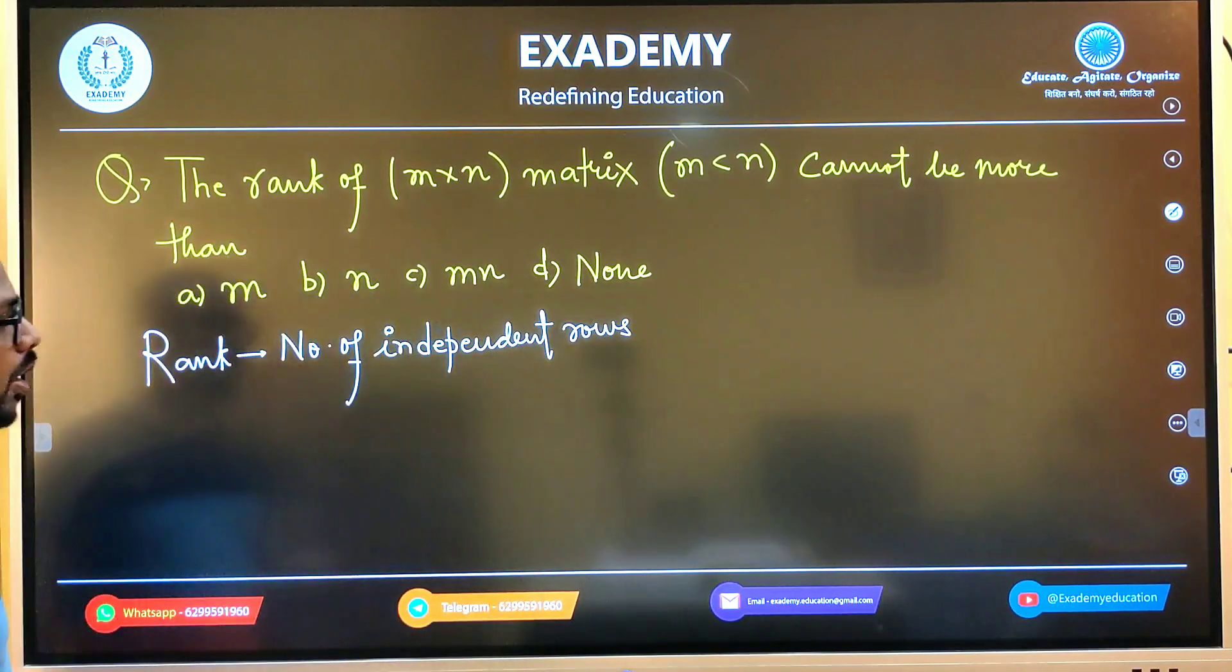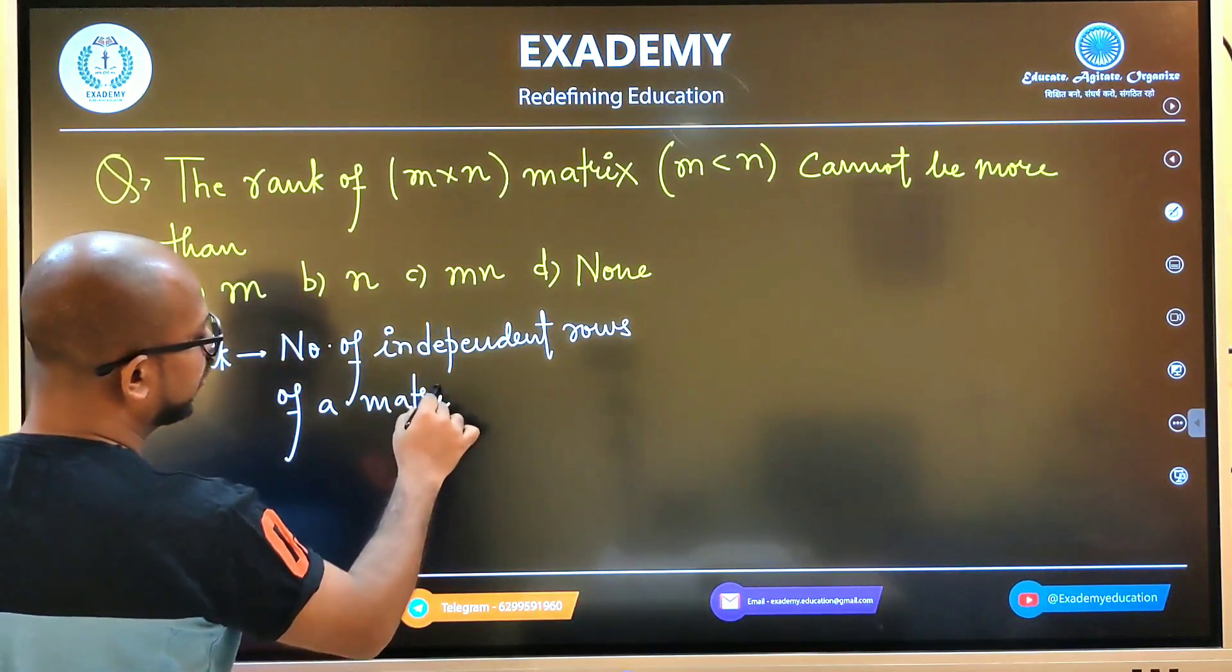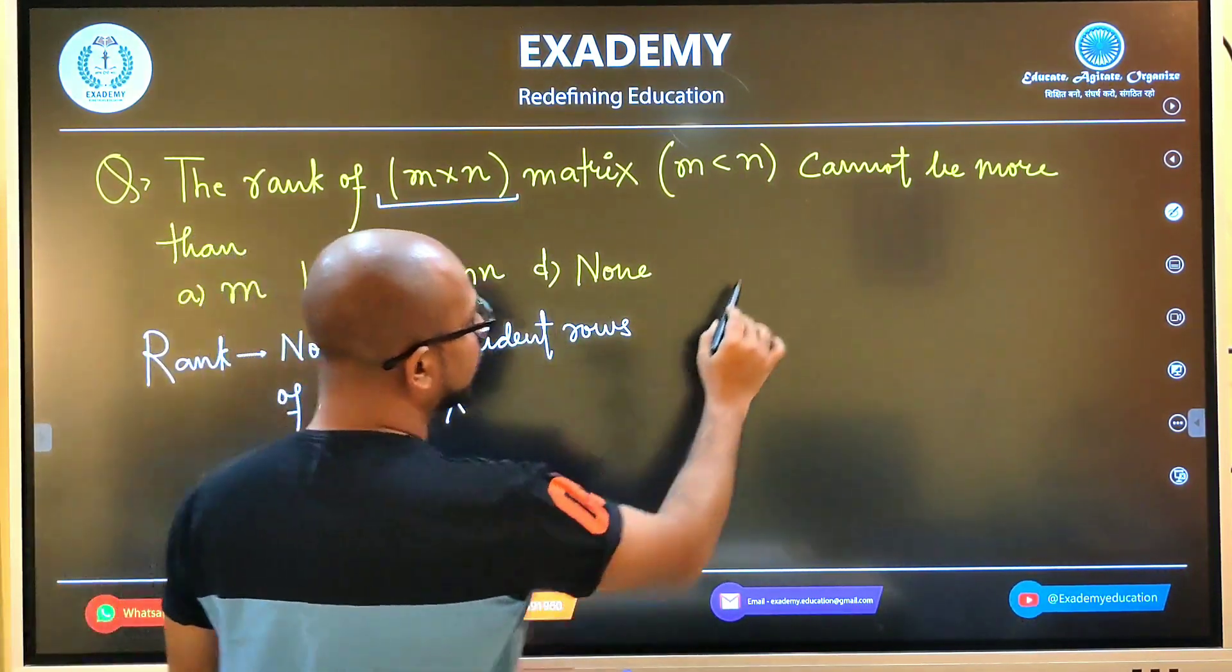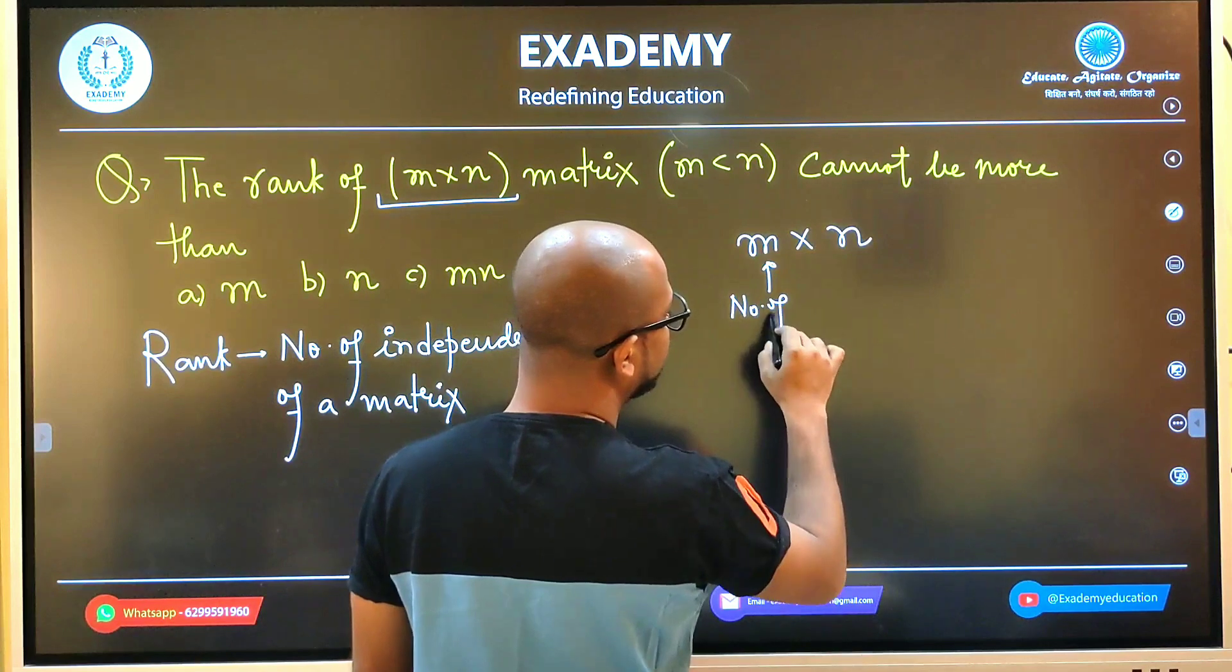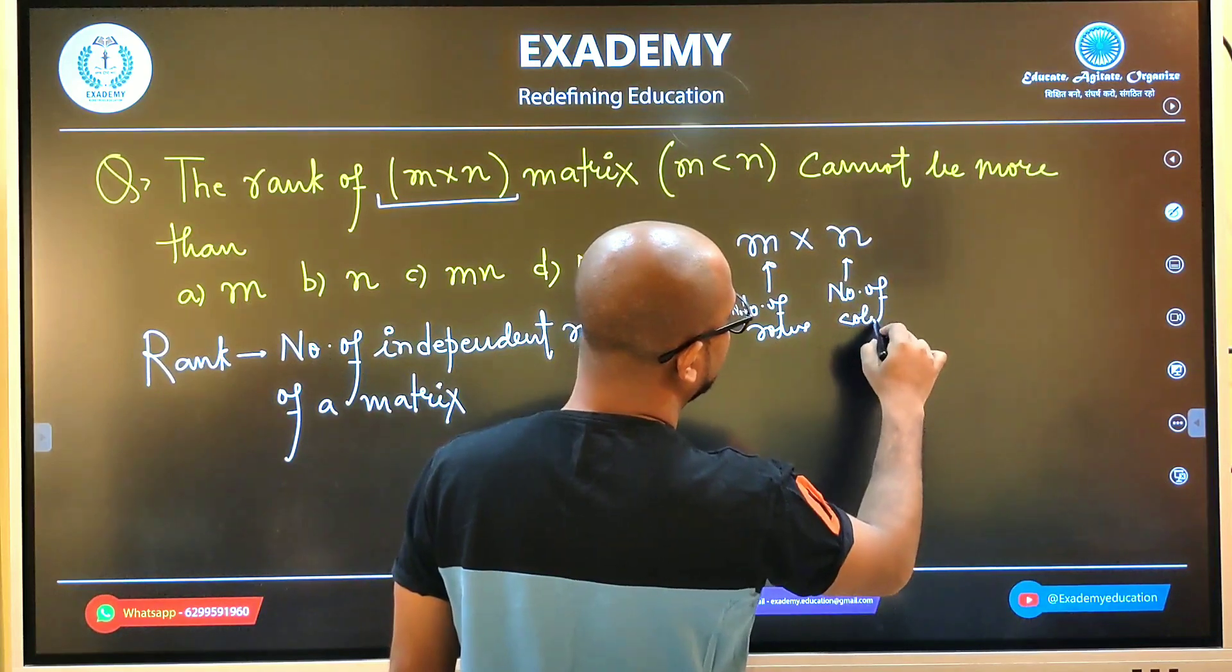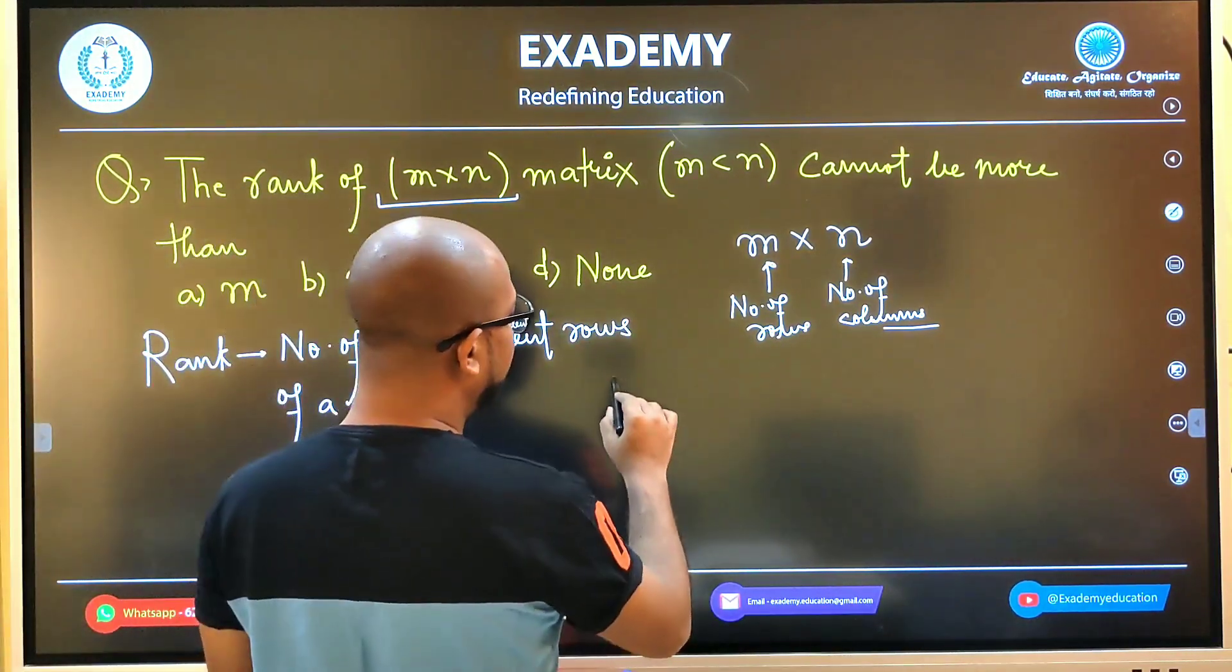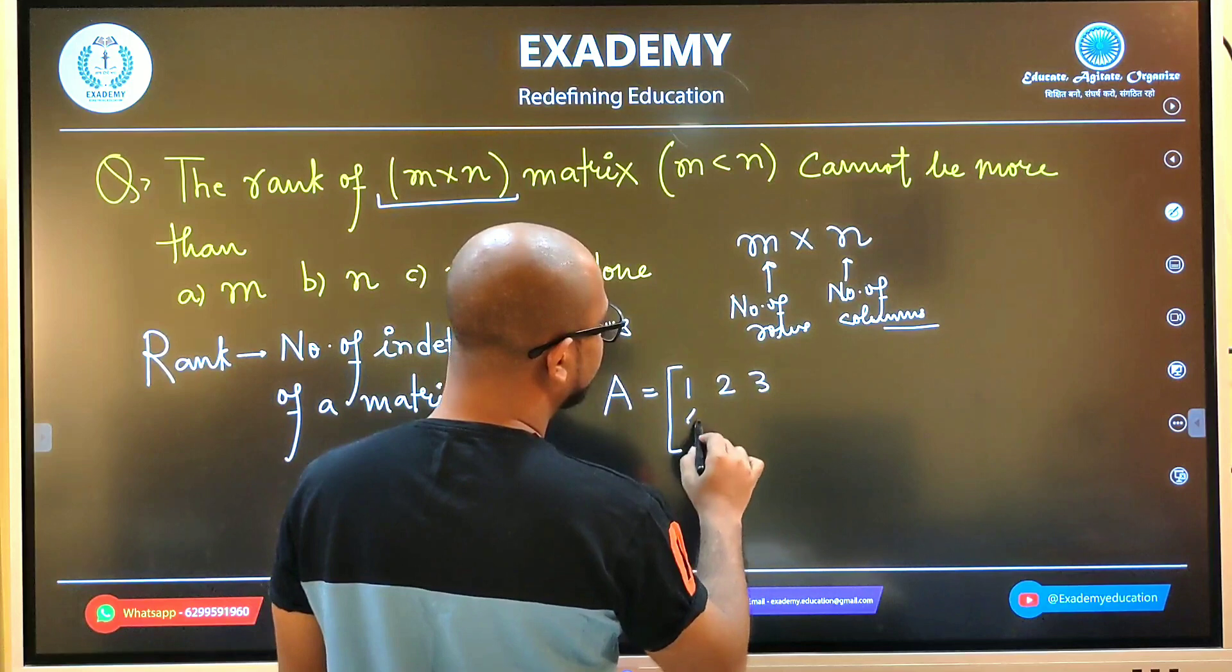The rank of M×N matrix is the number of independent rows or number of independent columns of a matrix. If we consider one matrix, suppose it has elements 1, 2, 3, 4, 5, 6.